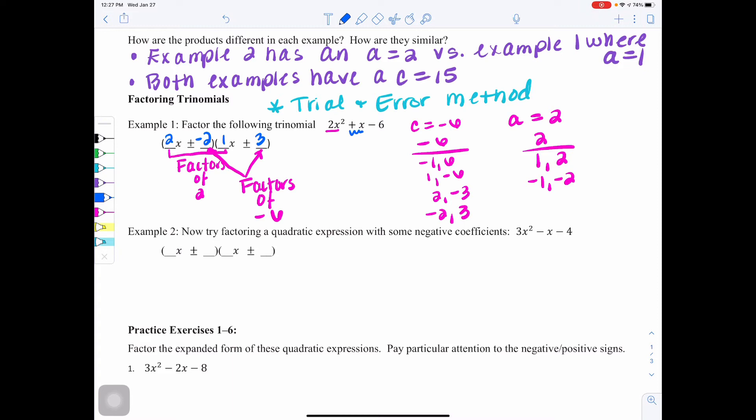So now you can try something like switching their spots. So maybe I want to do 2x with the negative 3 here, and then the x with the positive 2 here. So then again, we would try to multiply them out. 2x times x would be 2x squared. That matches. 2x times 2 would be 4x. Negative 3 times 1 would be negative 3x. That combination would give me a positive 1, and then negative 3 times 2 is indeed negative 6.